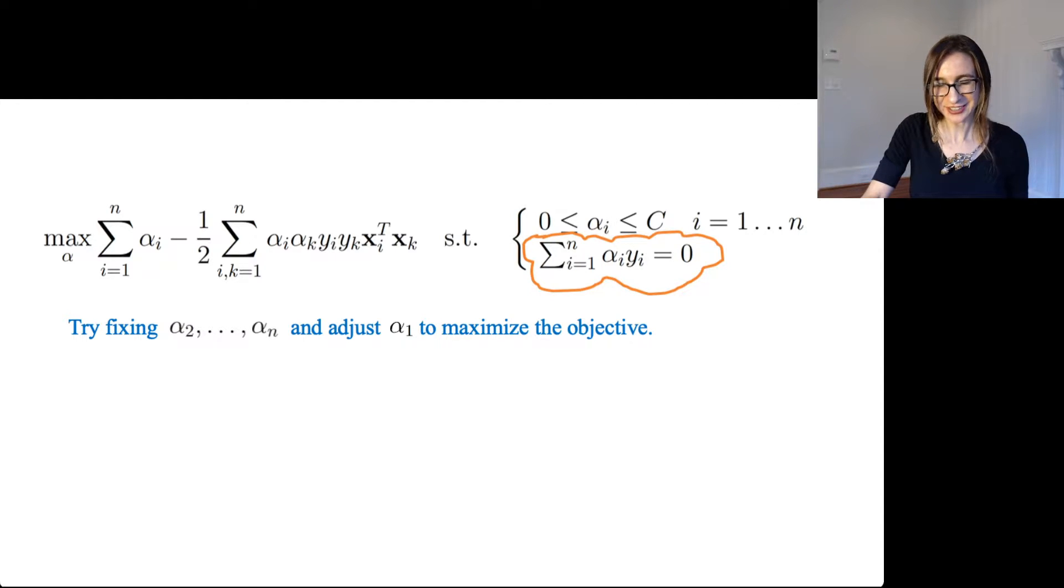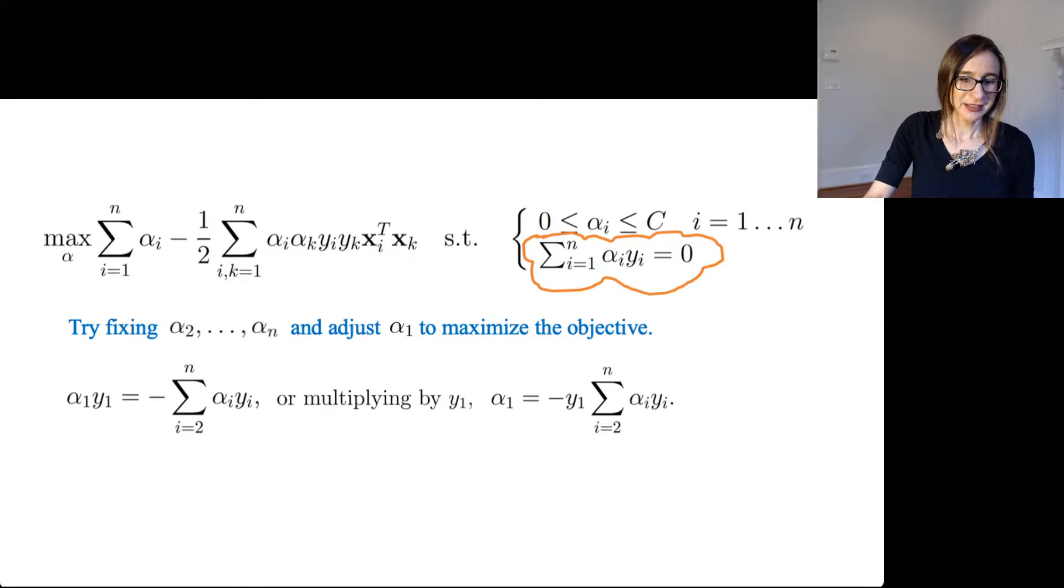So that constraint kind of ties all the alphas to each other. You can actually solve for alpha 1 in terms of the other alphas. So if you know all the other alphas, you actually know alpha 1 deterministically. So if I write it like this, divide both sides by y1. Y1 is plus 1 or minus 1, so it's the same thing as multiplying by y1. So there we go. We have alpha 1 as a function of the other alphas.